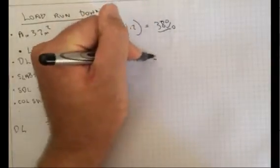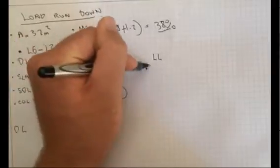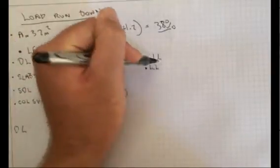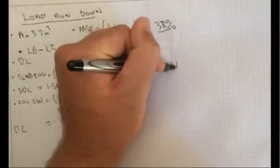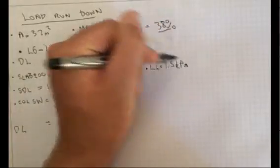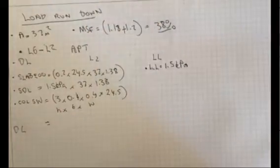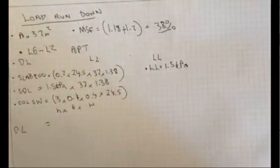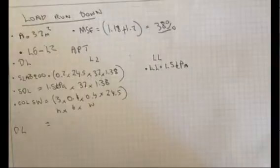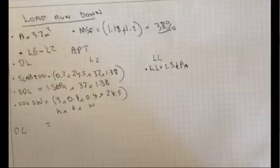And then also we've got the live load, which for an apartment in Australia is going to be roughly 1.5 kPa for most apartments. In most codes, there's going to be a live load reduction factor.